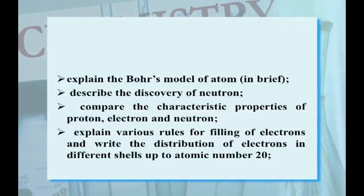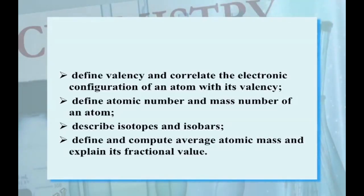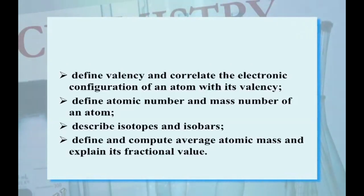Describe the discovery of neutron. Compare the characteristic properties of proton, electrons and neutrons. Explain various rules for filling of electrons and write the distribution of electrons in different shells up to atomic number 20. Define valency and correlate electronic configuration of an atom with its valency. Define atomic number and mass number of an atom, describe isotopes and isobars. Define and compute average atomic mass and explain its fractional value.